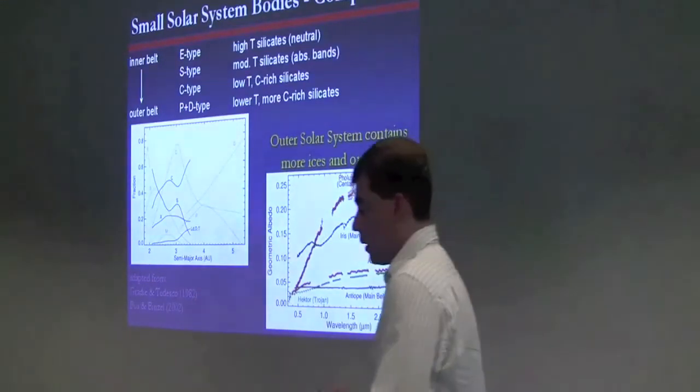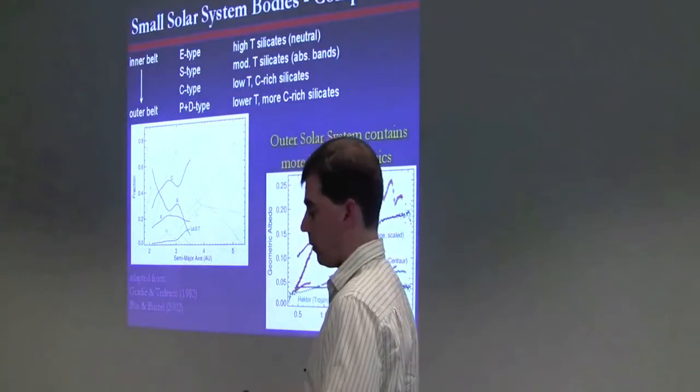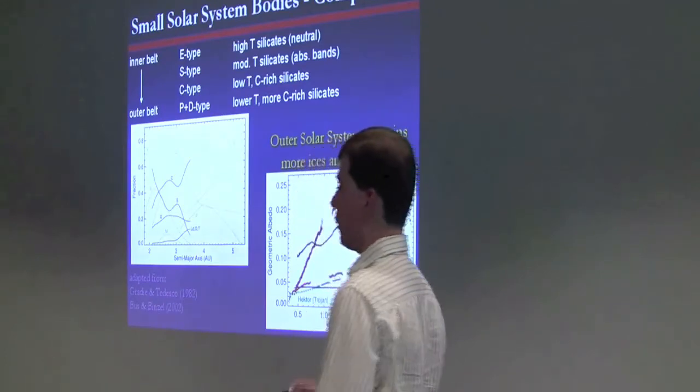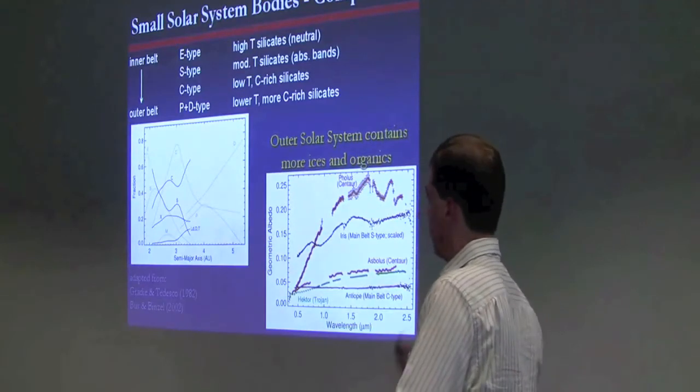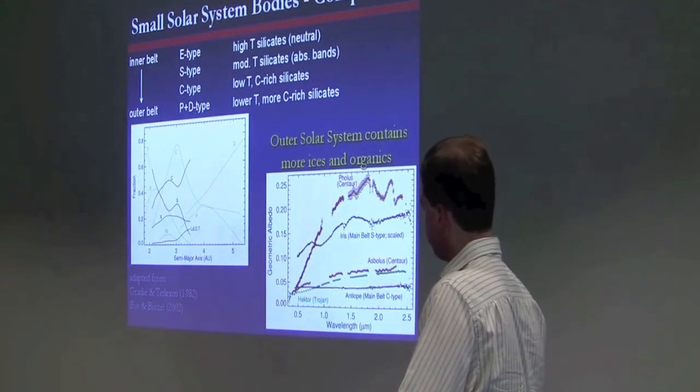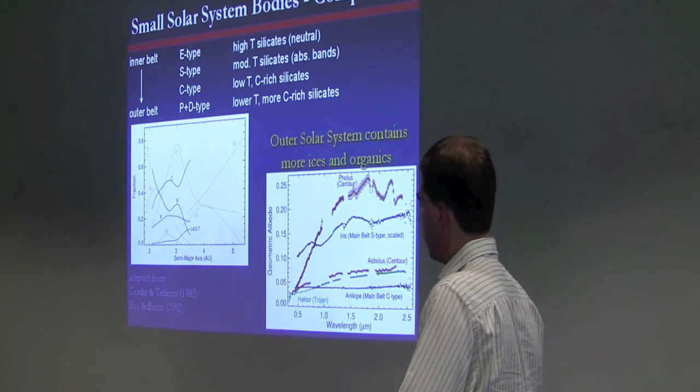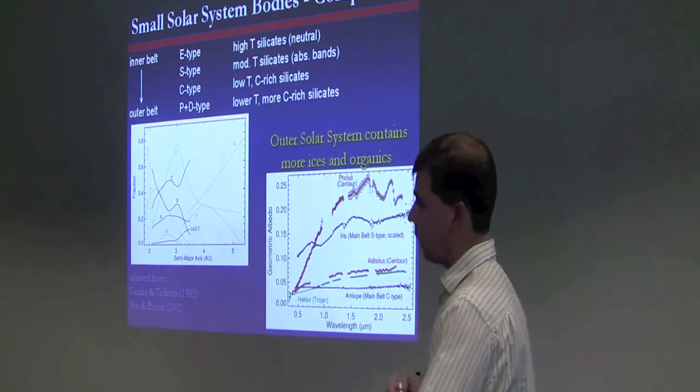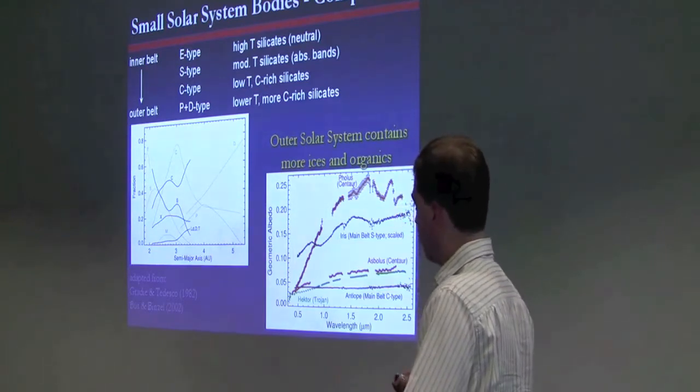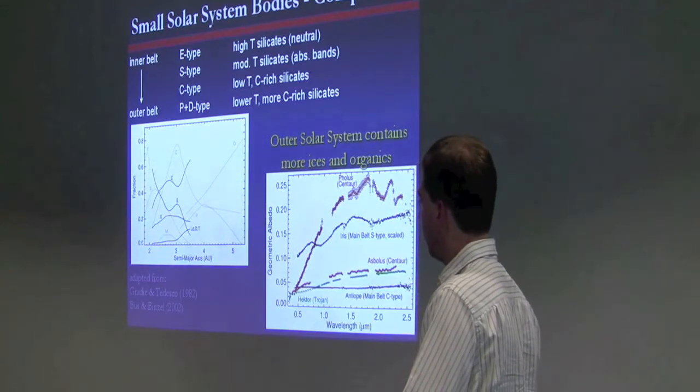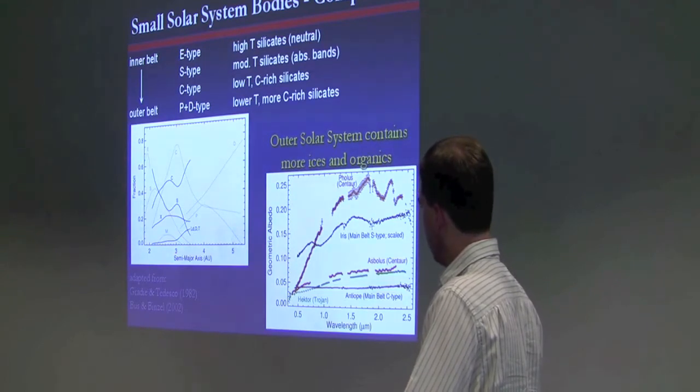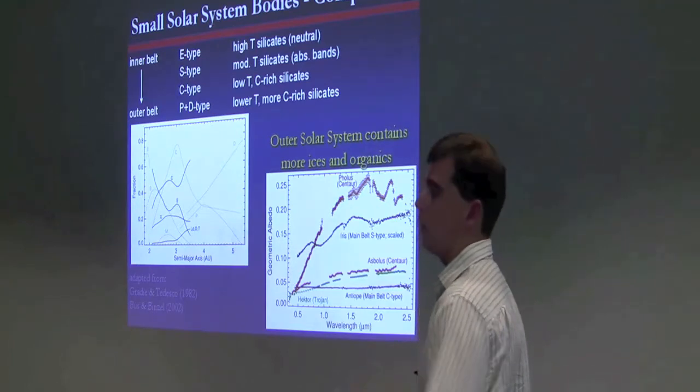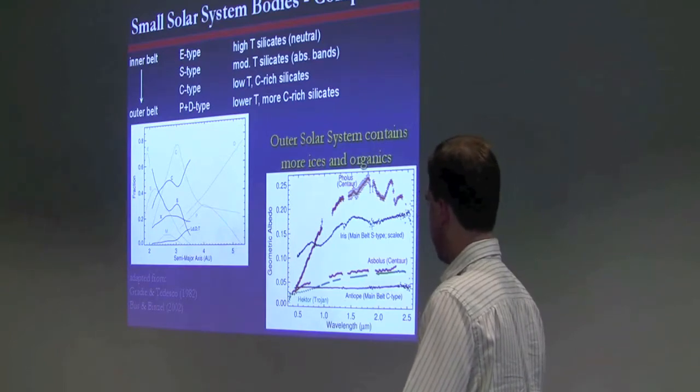Compositions of small bodies throughout the solar system in general follow a trend with heliocentric distance. This was first noticed for the main asteroid belt from just visible wavelength spectroscopy in the late 70s, early 80s, where it was noticed that silicate-rich asteroids, these S-types dominated in the inner part of the main belt. The C-type, which were interpreted to have more low-temperature silicates and carbon-rich material dominated in the middle part. And then, in the outer part were these objects that had redder spectral slopes and wasn't quite sure what they were, but they were interpreted to be even more carbon-rich, maybe organics on the surfaces. Those are the P and D-type asteroids that I'd mentioned before.